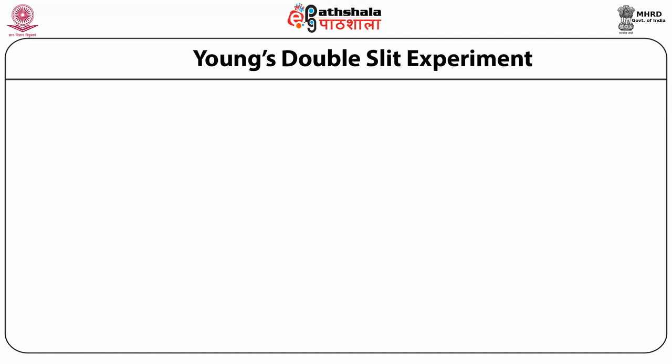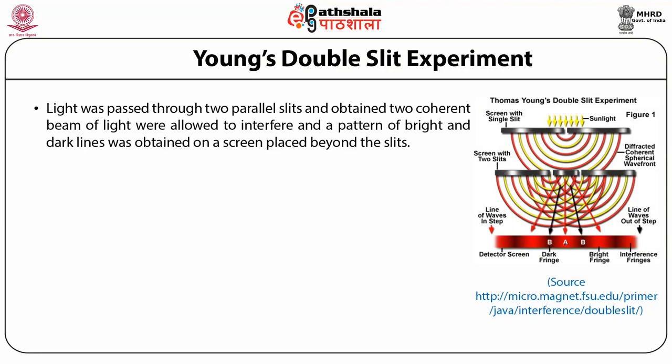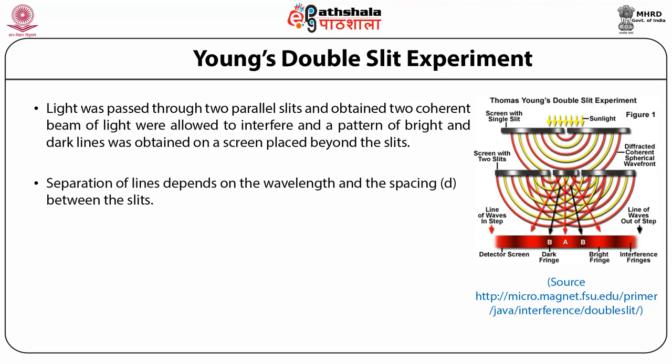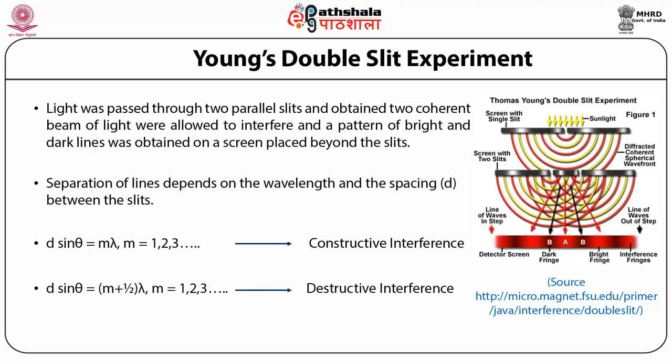Young's double slit experiment: In 1801, Young devised and performed an experiment to measure the wavelength of light. Light was passed through two parallel slits and two coherent beams were obtained; these beams were allowed to interfere, producing a pattern of bright and dark lines on a screen. The separation of these lines depends on the wavelength and the slit spacing D. For constructive interference: D sinθ = mλ, where m = 1, 2, 3, … For destructive interference: D sinθ = (m + ½)λ.